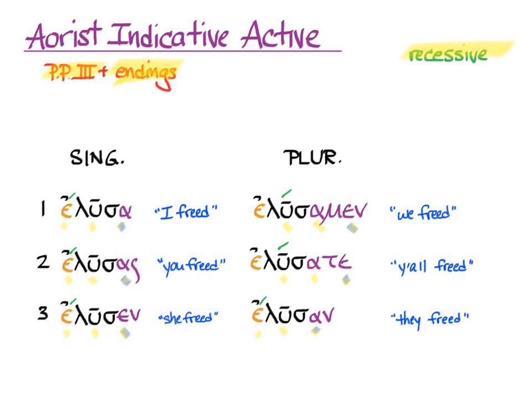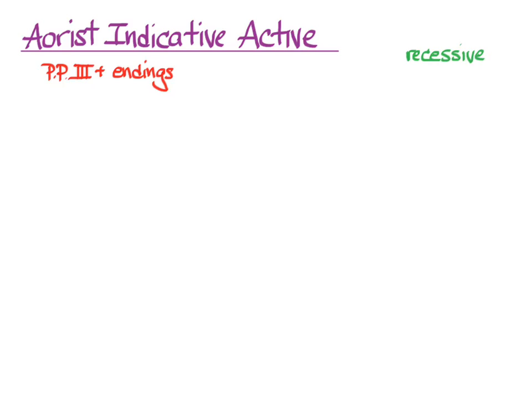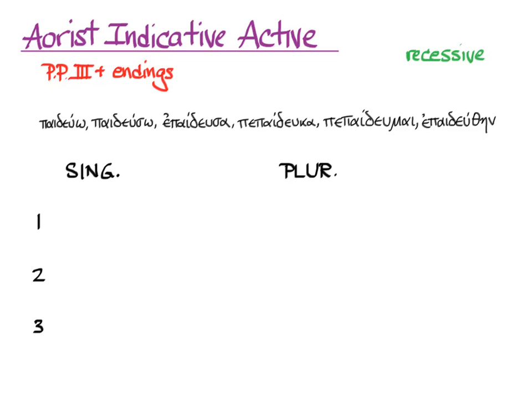Let's try it with another verb. Here's our friend paideuo with its six principal parts: paideuo, paideuso, epaideusa, pepaideuka, pepaideumai, epaideuthēn. We go to the third principal part, and keeping the augment, we use the stem which we get by taking the alpha off of the end of the principal part. We add the ending and we put in the recessive accent.